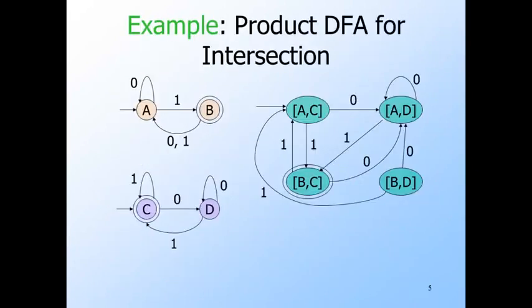Here's an example based on the same product automaton we used last time. The only final state in the product is BC, because B and C are the only final states of their respective automata.